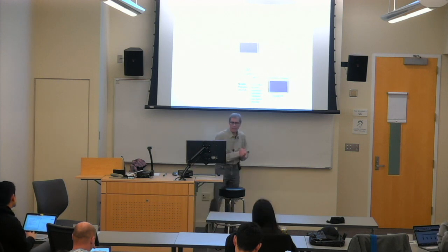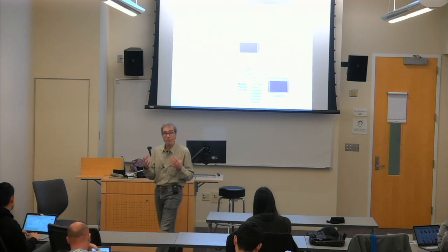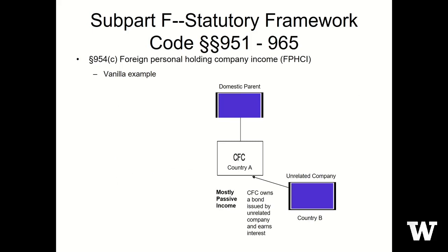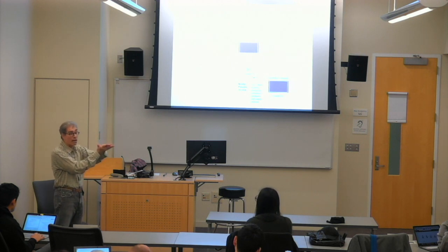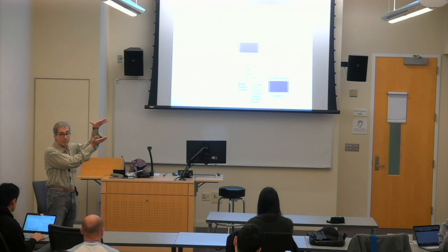Let's look at a vanilla example of foreign personal holding company income. The CFC owns a bond issued by another unrelated company and earns interest income. That's included in foreign personal holding company income. It will then become foreign-based company income, which is then included in subpart F income.